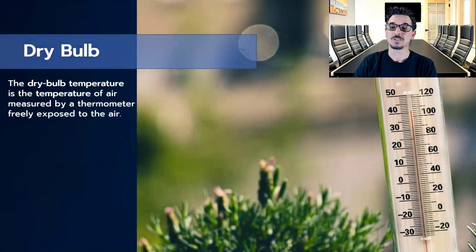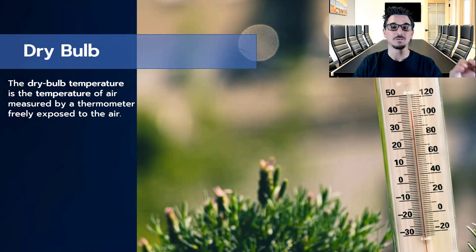So dry bulb is pretty easy. It's the temperature you see if you look at a thermometer. It's completely independent of the humidity in the air. It's only measuring the temperature of the air. Any thermometer you look at, that's your dry bulb temperature. If you read the news and it's going to be 90 degrees outside, that's the dry bulb temperature.